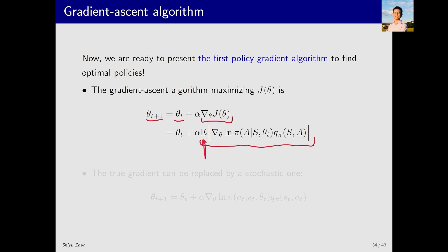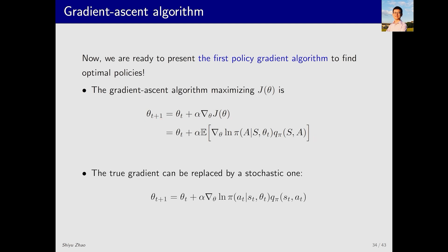However, this gradient is not usable in practice because there is an expectation that involves the state distribution, and we don't know this distribution. Therefore we cannot compute this expectation directly. To solve this problem, we can use a stochastic gradient to replace the true gradient.